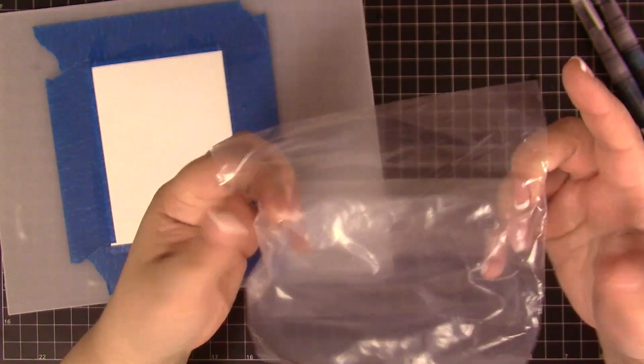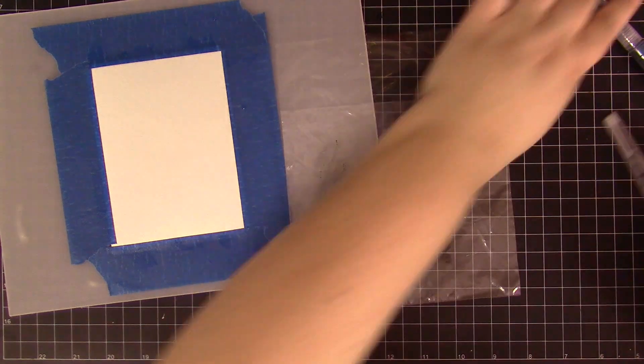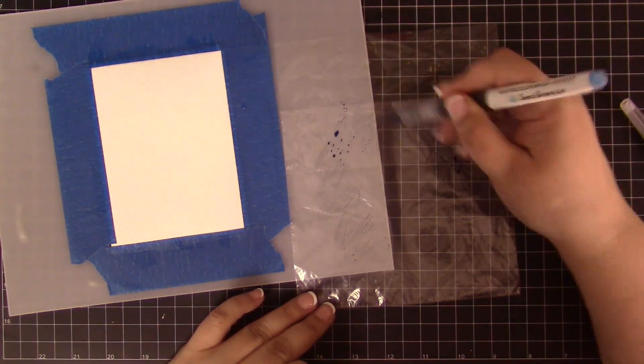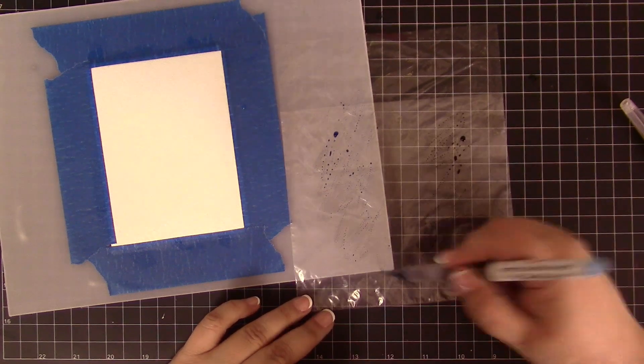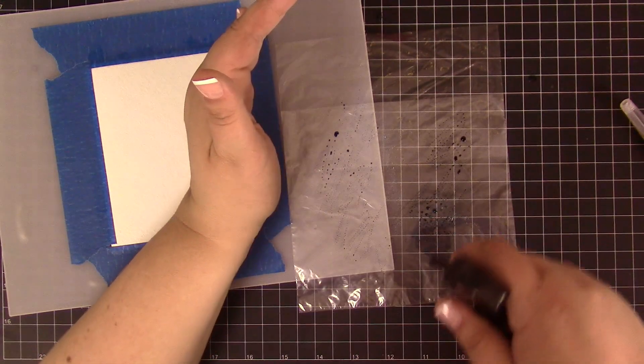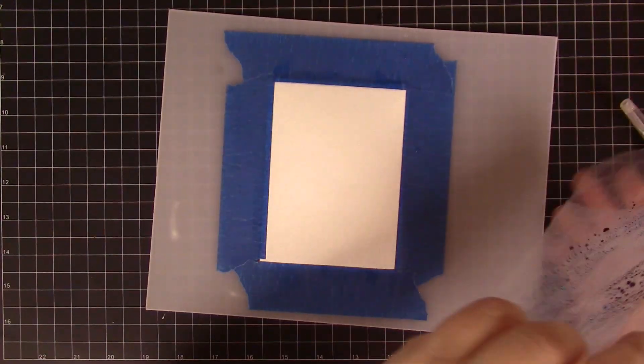I'm placing it the back side up and scribbling the markers onto it. If you don't have such a sandwich bag, you can use any similar product, something flexible and plastic like an acrylic block for example. Now I'm spraying a little bit of water onto the bag to mix the watercolor scribbles together.